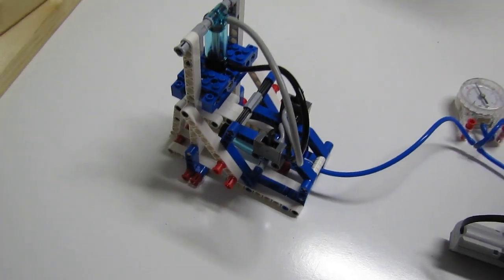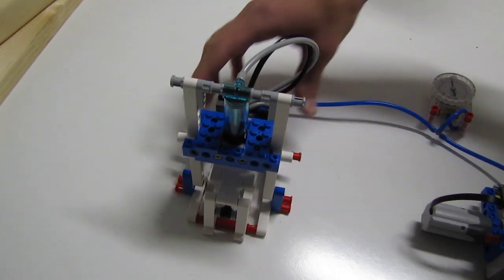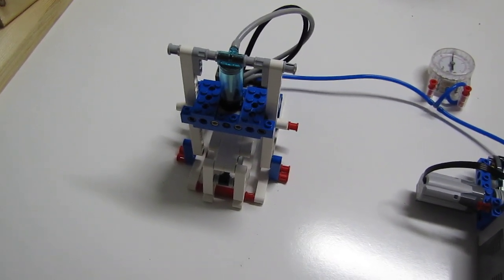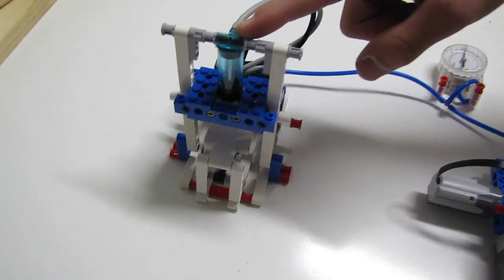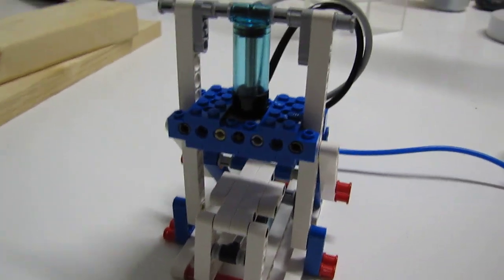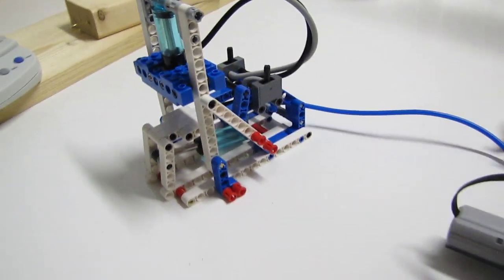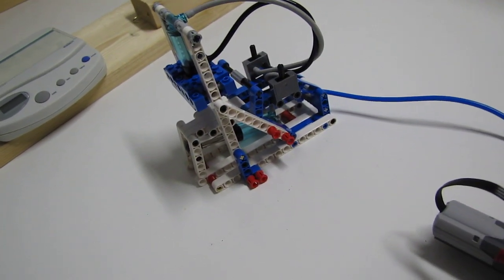Now it uses three pneumatics: one here for the stamper so it imprints on the paper, one here so that it pulls it forward and will drop the piece of paper, and over here this miniature one instead of a compressor.